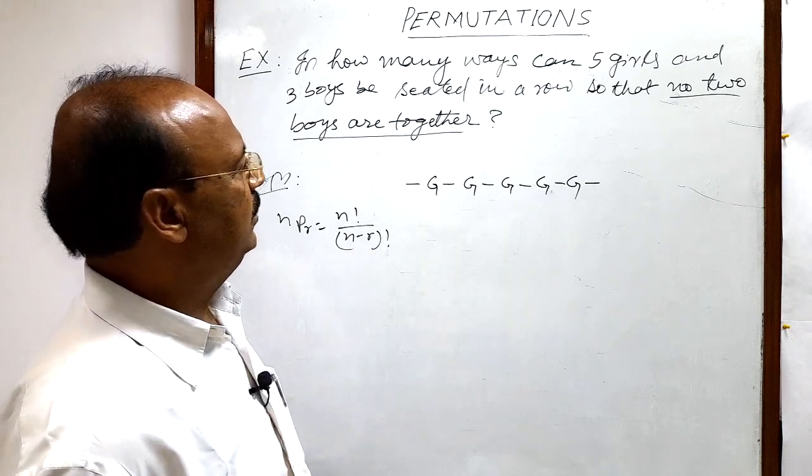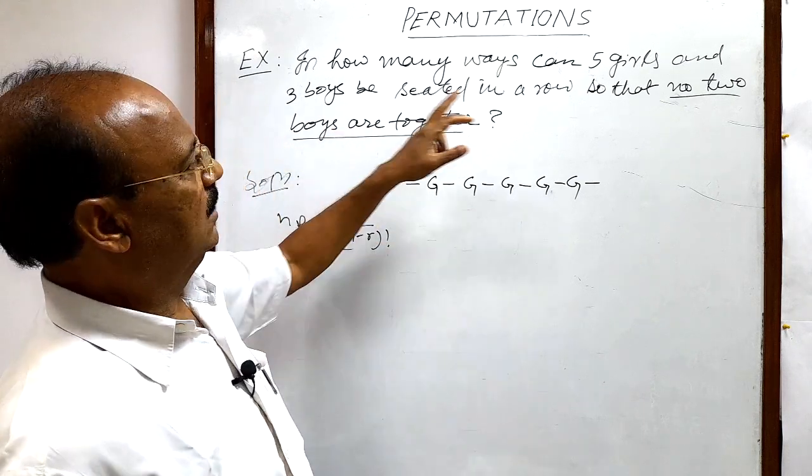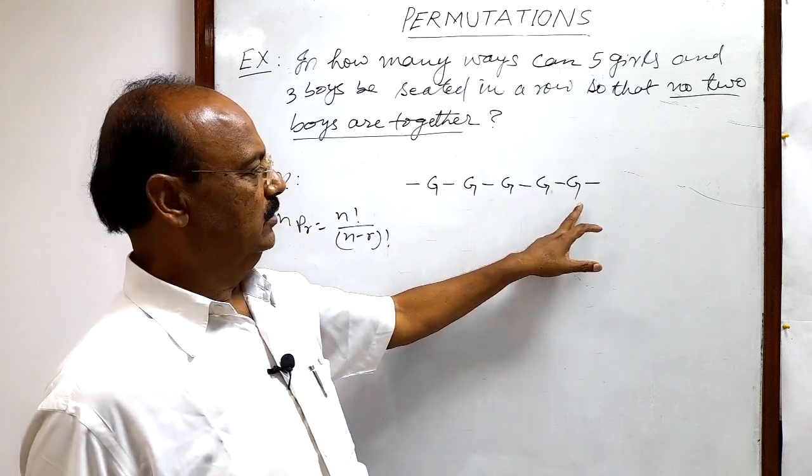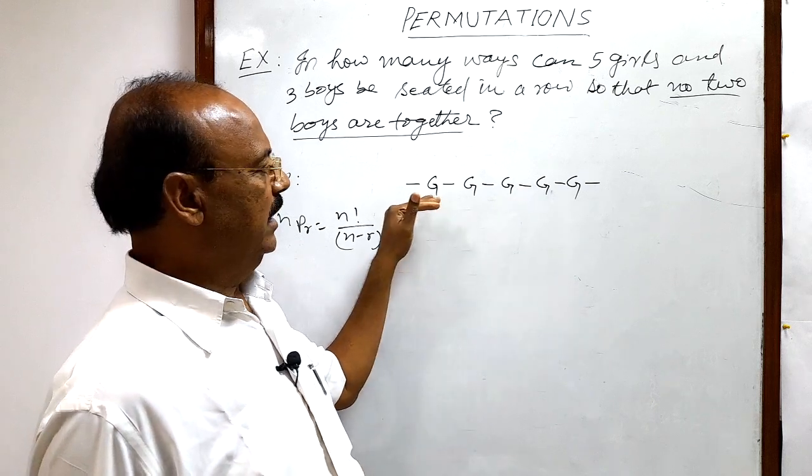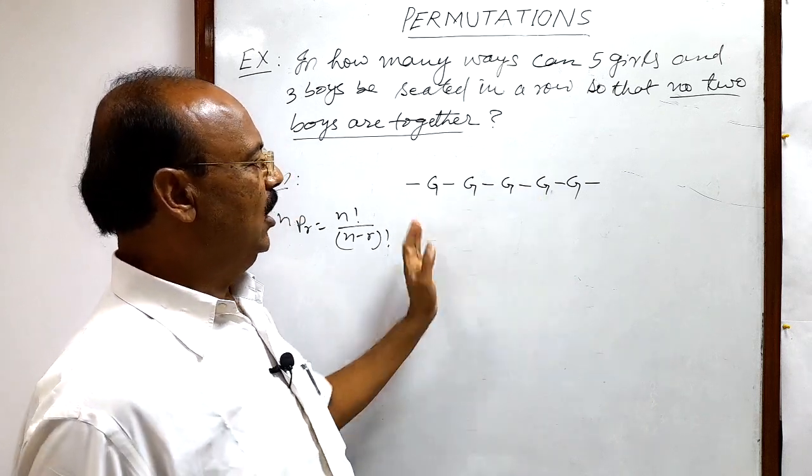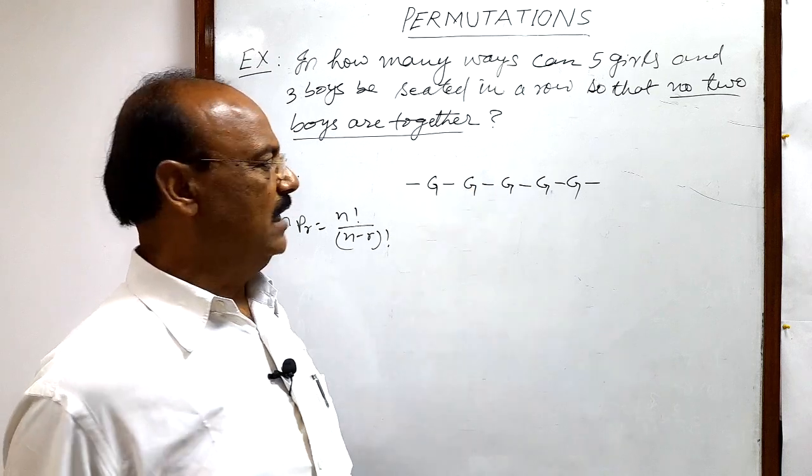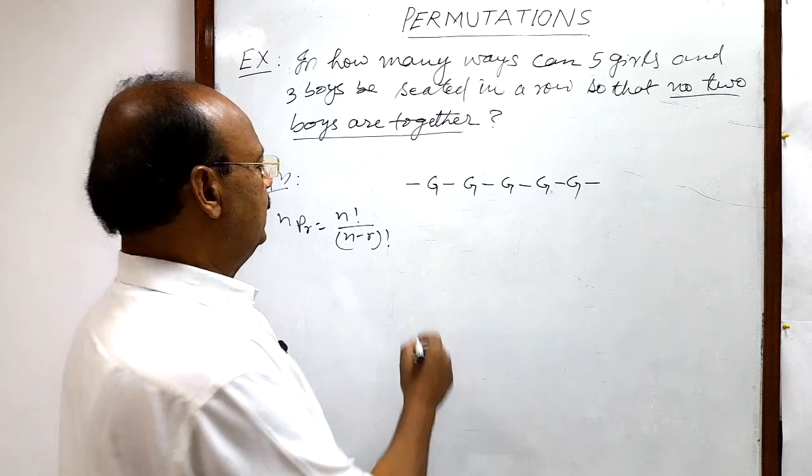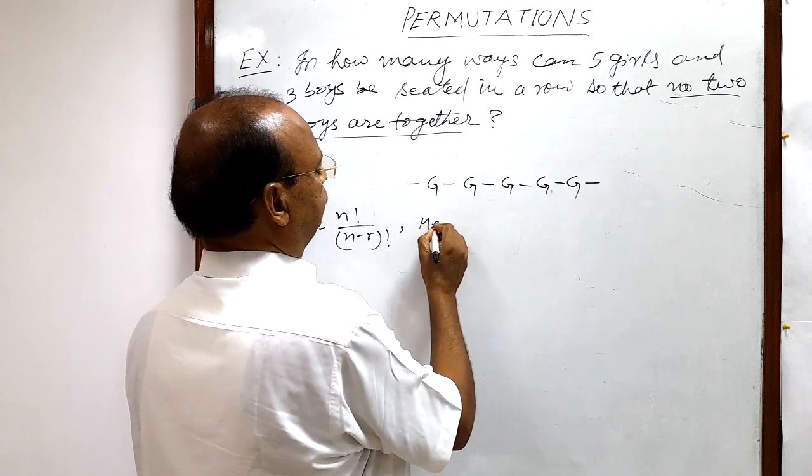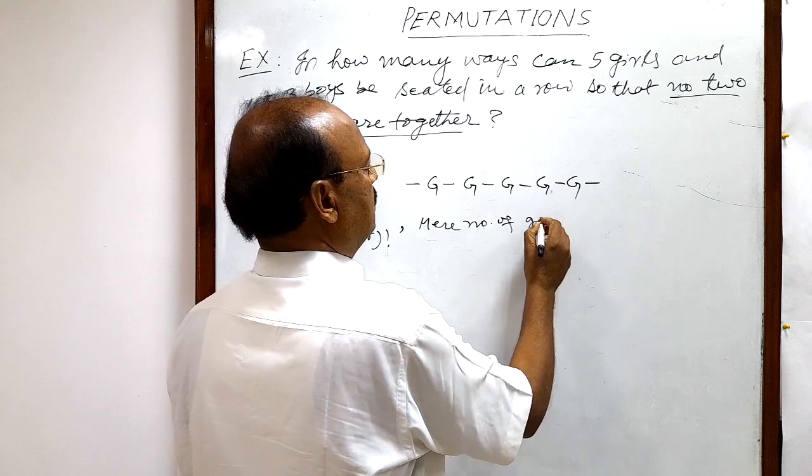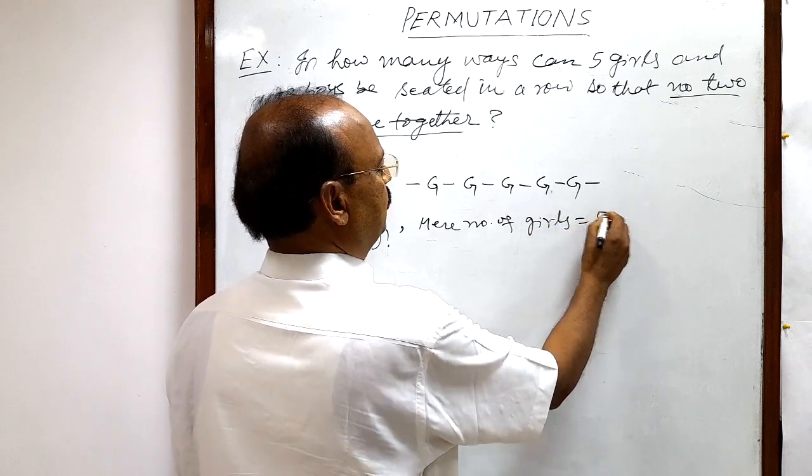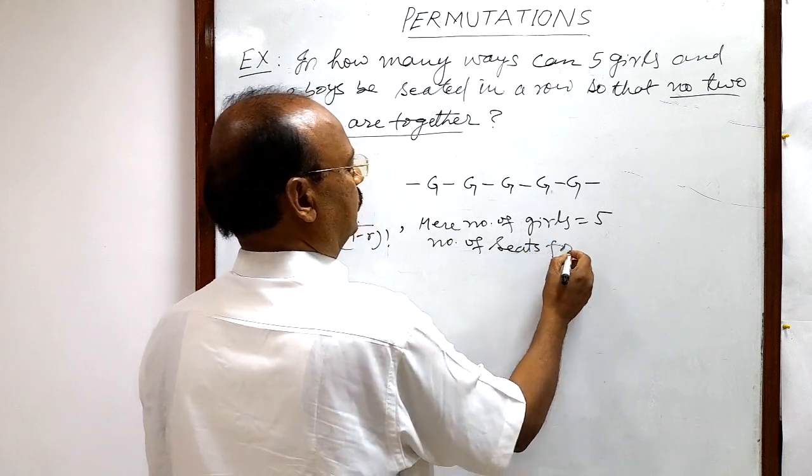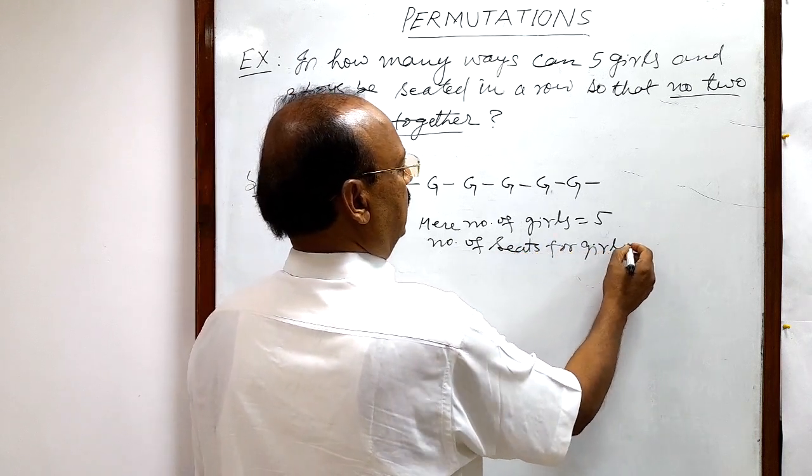So first of all let us see that there are five girls and five places for these girls, five seats for these girls. So in how many ways can these five girls be arranged? Five P five. So let us write a statement also.